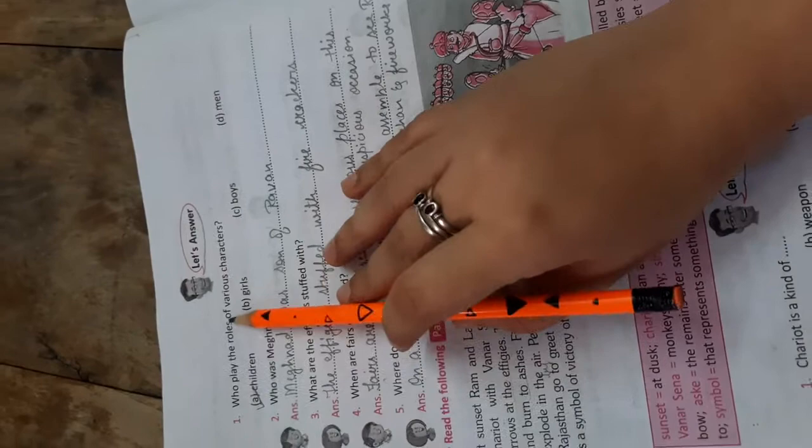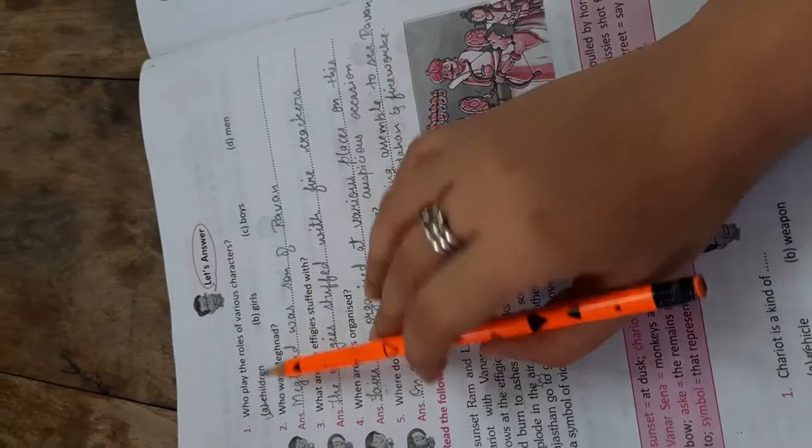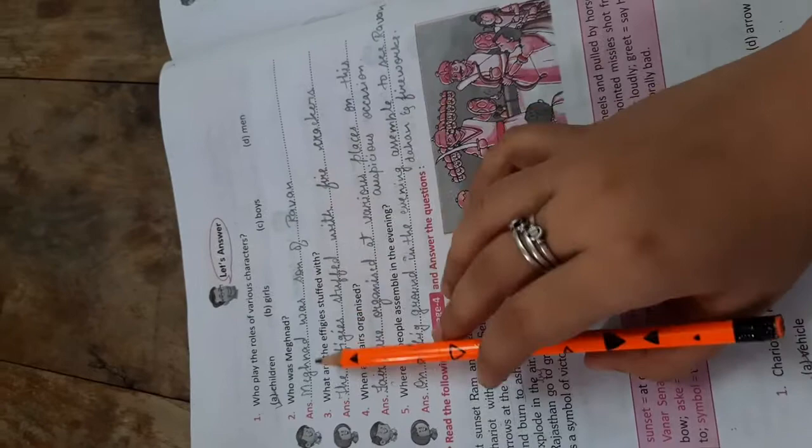Now come to next scene number 42. Who played the roles of various characters? Children are playing the various characters. Who was Meghanad? Meghanad was son of Ravan.